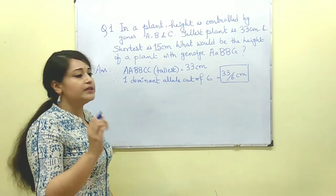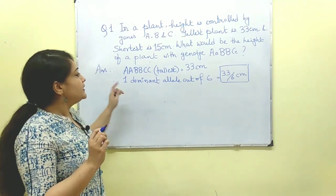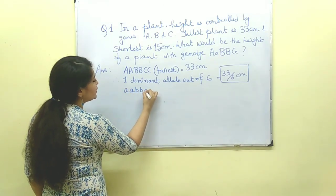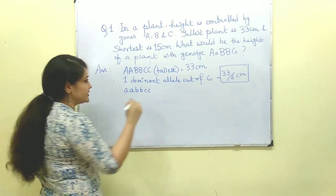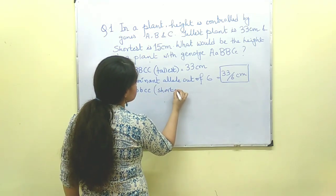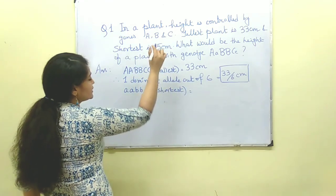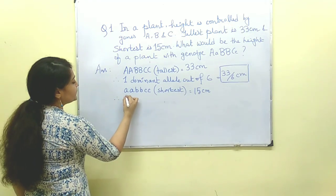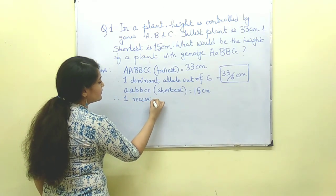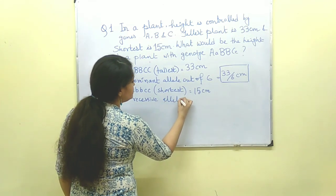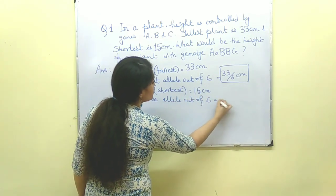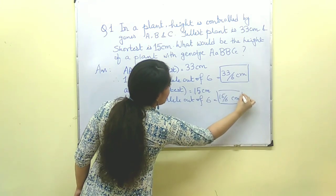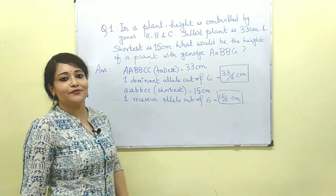Now let us talk about the shortest plant. The genotype of the shortest plant is going to be aabbcc — all recessive. By the question, the height of the shortest plant is 15 centimeters. So one recessive allele out of the six is going to be 15/6 centimeters. This is the other data we are going to require to solve this question.